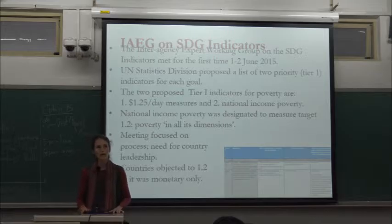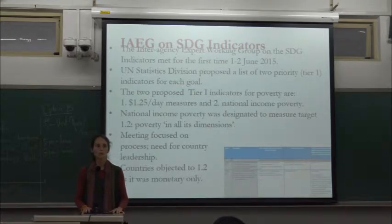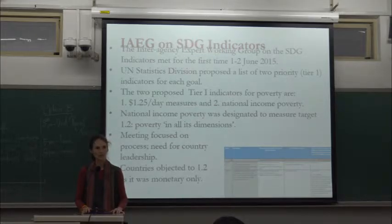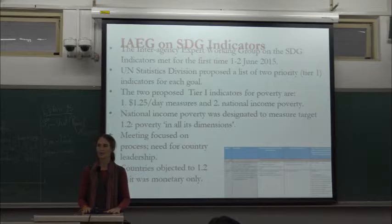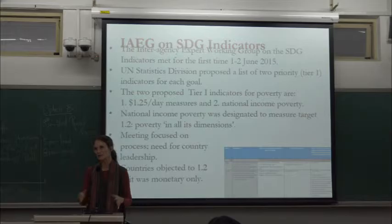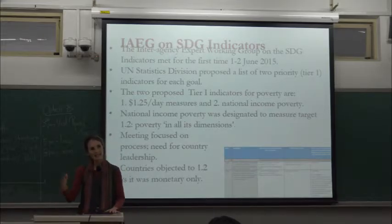Also in the list proposed by the UN Statistics Division, Target 1.2 was now only reflected by a national income poverty line — multidimensional poverty had been dropped — and the countries objected to that. We were actually at that time in Cartagena with the network, with fast and furious phone calls between members attending both meetings.